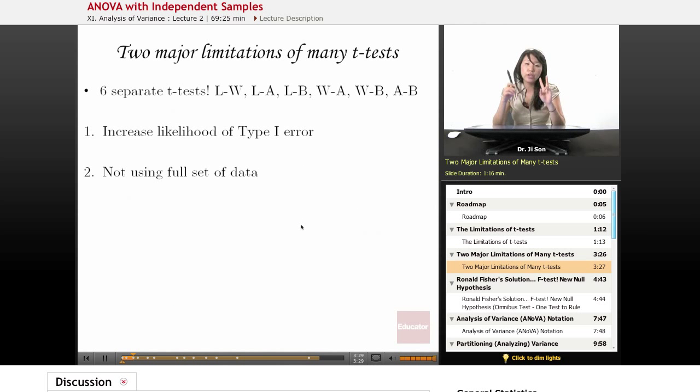So you should know there are two major limitations of having many tiny little t-tests. So if you have six separate t-tests, one is the increased likelihood of type 1 error, and that's bad. We don't want a false alarm. But there's a second problem.